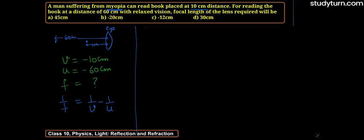Substituting values: 1/f = 1/(-10) - 1/(-60). Minus minus becomes plus, so this equals -1/10 + 1/60.